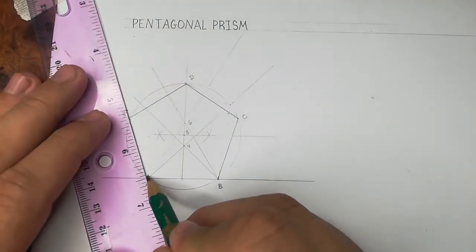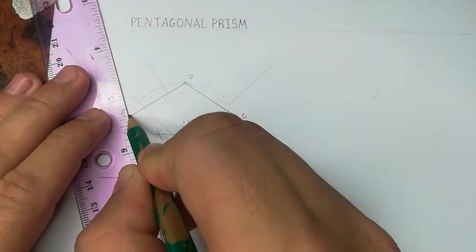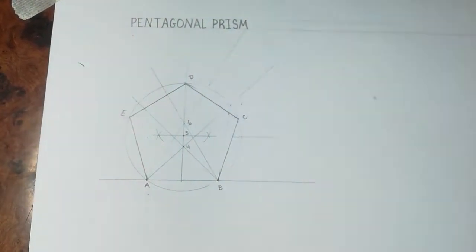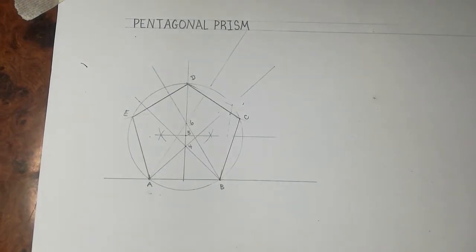So this is my pentagon, pentagon A, B, C, D, E. To draw a pentagonal prism, the first thing that you need to do is to draw the pentagon. Now the next step is to enclose the pentagon into a rectangle.